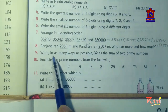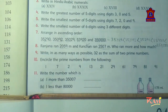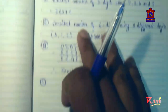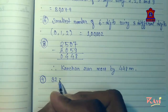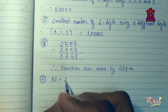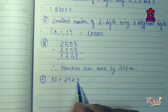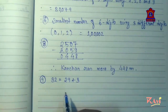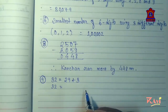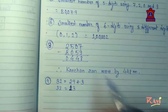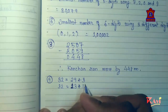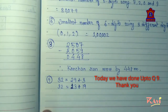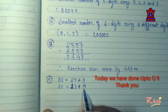Next: write in as many ways as possible 32 as the sum of two prime numbers. See here, 29 is a prime number and 3 is a prime number, so 29 plus 3 equals 32. Another pair: 13 plus 19 equals 32 — here 13 is a prime number and 19 is also a prime number.